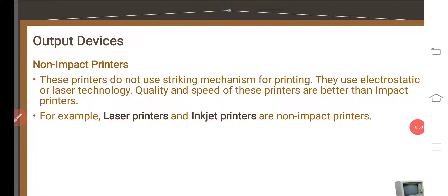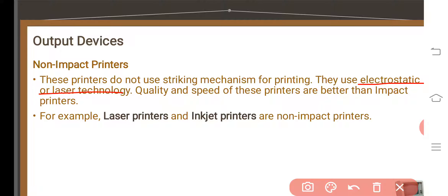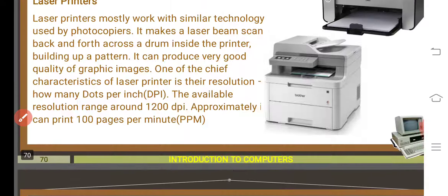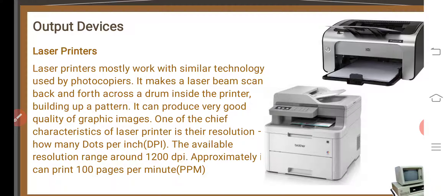The non-impact printer does not use a striking mechanism for printing. Instead, it uses electrostatic or laser technology. The speed of non-impact printers is better — they are faster than impact printers. There are two types: the laser printer and the inkjet printer.